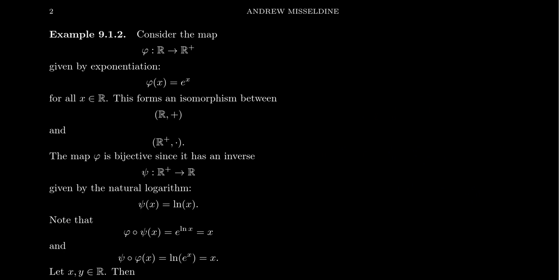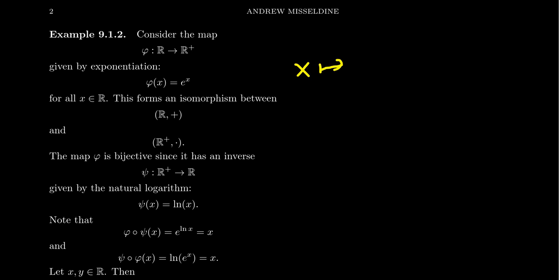Let's look at a first example I really like, because it's not something you would expect to be isomorphic. Consider the two groups associated to real numbers: the real numbers under addition — including positive, negative, and zero — compared to the positive real numbers with respect to multiplication. Both are groups. We'll define an isomorphism phi between them, which is simply exponentiation: we send the real number x to e to the x.